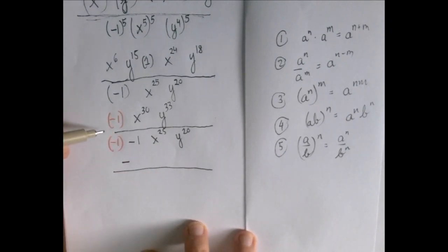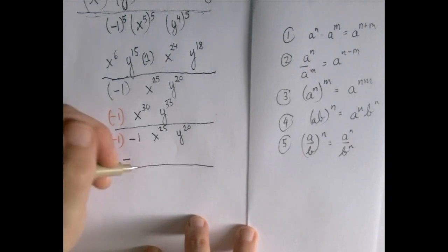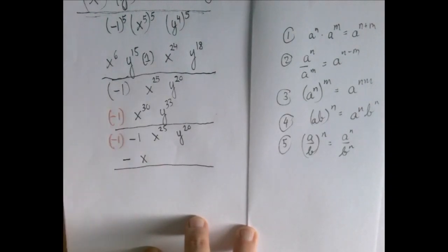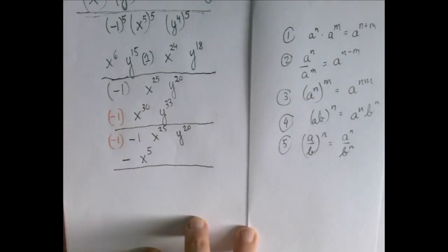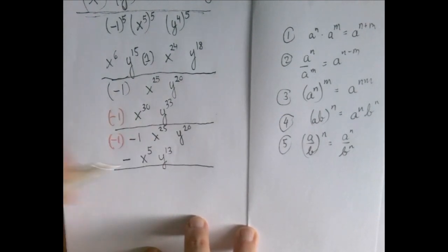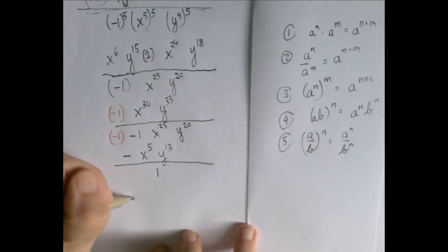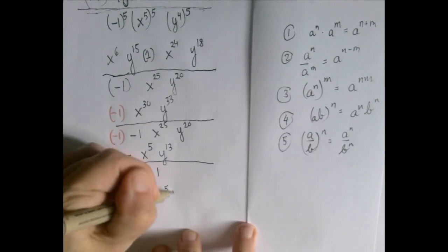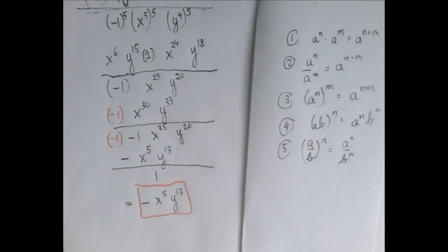X to the thirty divided by X to the twenty-five is X to the thirty minus twenty-five, which is X to the five. Y to the thirty-three over Y to the twenty is Y to the difference of thirty-three and twenty, which is Y to the thirteen. The denominator runs out to one, so the simplified form is negative X to the fifth times Y to the thirteenth. That is our final answer. Thank you for watching.